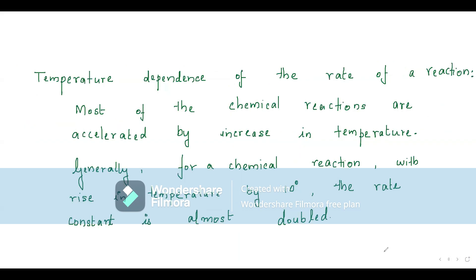Those are the differences between order and molecularity — any two or three points you must study. Next topic is temperature dependence of the rate of a reaction. Most chemical reactions are accelerated — their rate increases with increase in temperature. Generally, for every 10-degree rise in temperature, the rate constant approximately doubles.